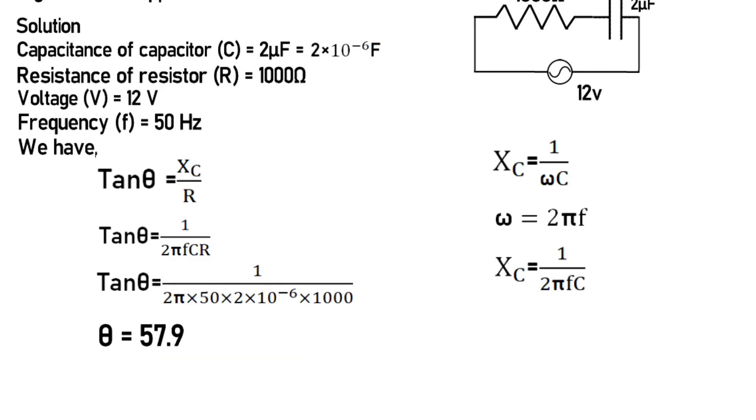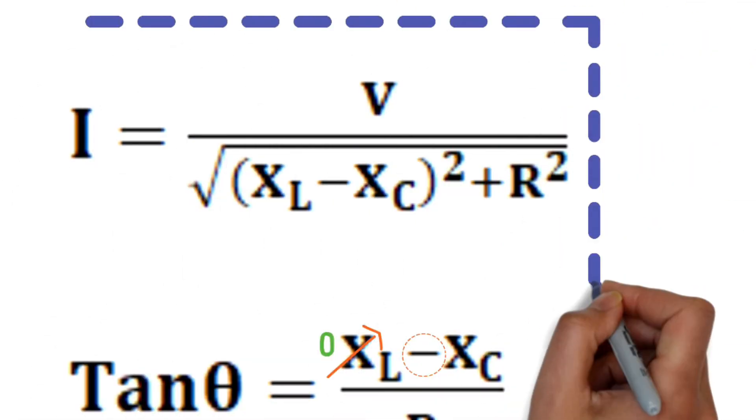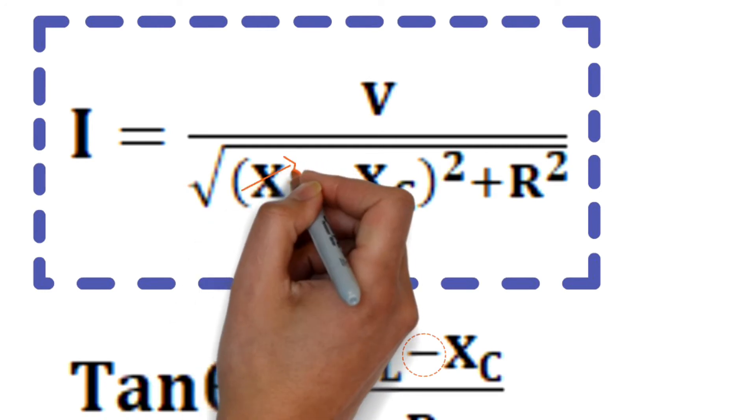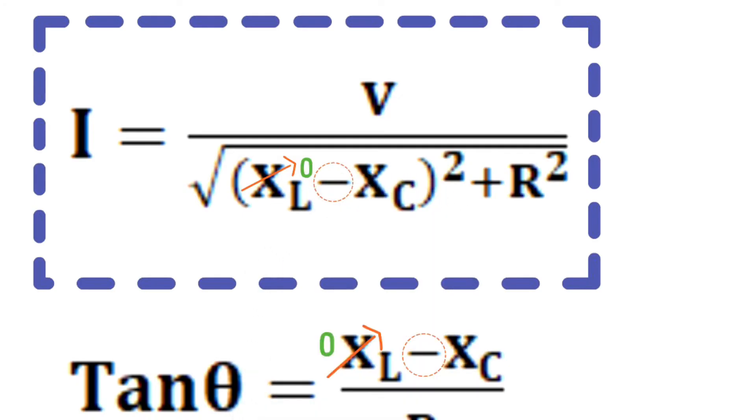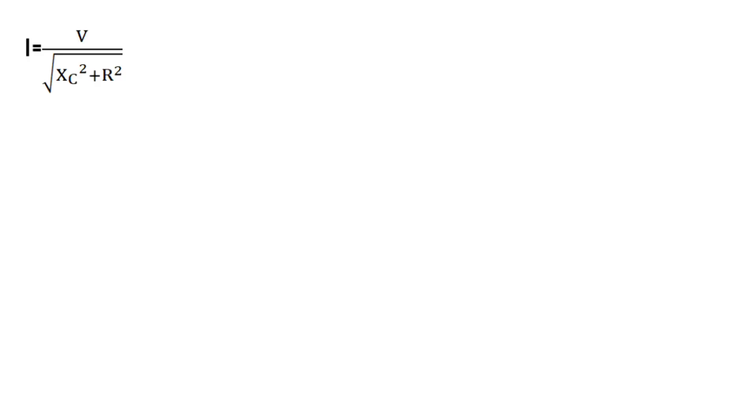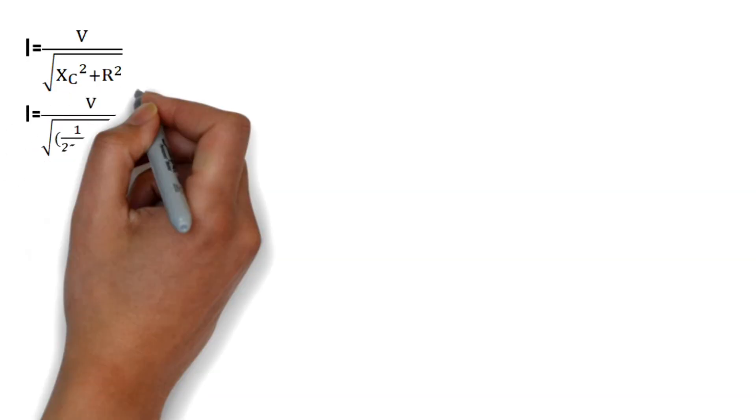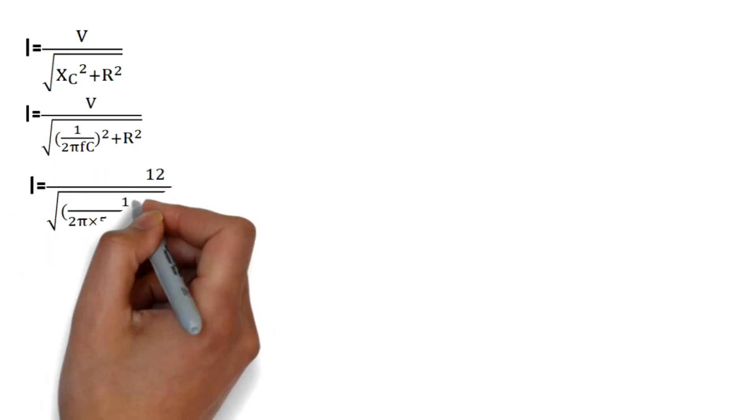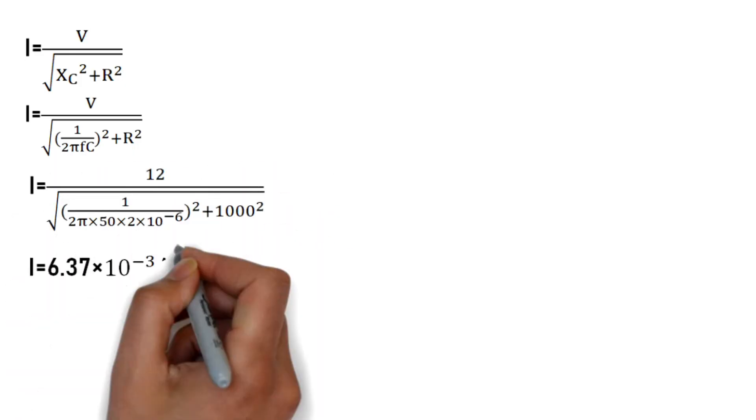For current in the circuit, the formula is I = V/√((XL - Xc)² + R²). Since there is no inductor, XL = 0, so I = V/√(Xc² + R²) where Xc = 1/(2πfC). Substituting all the known values, the current value is 6.37 × 10⁻³ ampere.